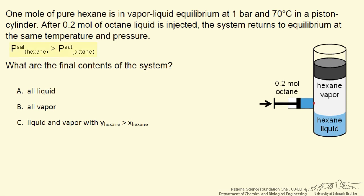We are given that the saturation pressure for hexane is greater than the saturation pressure for octane. The question is: when the system gets back to equilibrium, what are the final contents of this system?